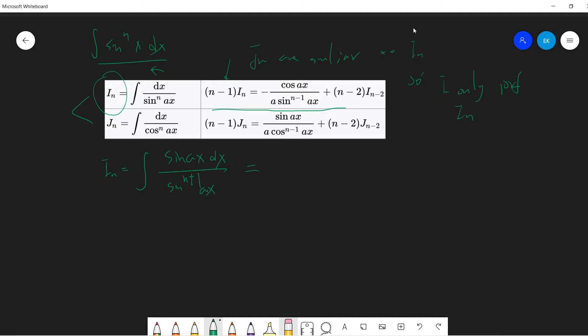Right, and I use the negative one over a cosine ax, derivative is just sine ax. Okay, so this is sine^(n+1) ax minus negative a cosine ax, derivative.